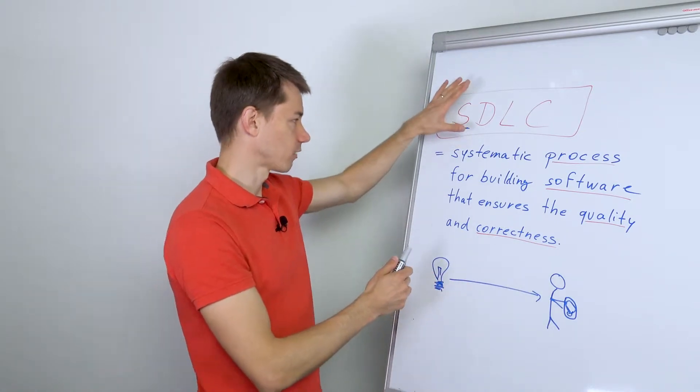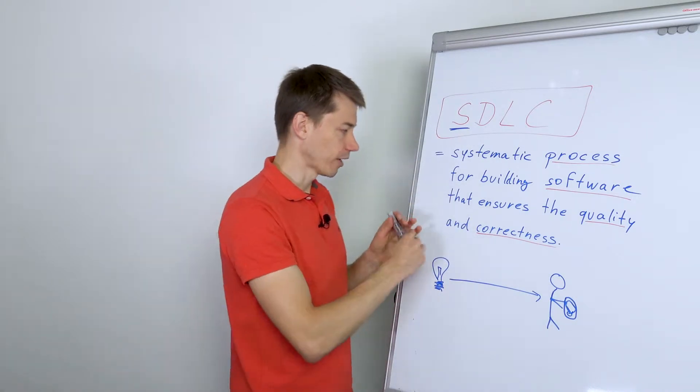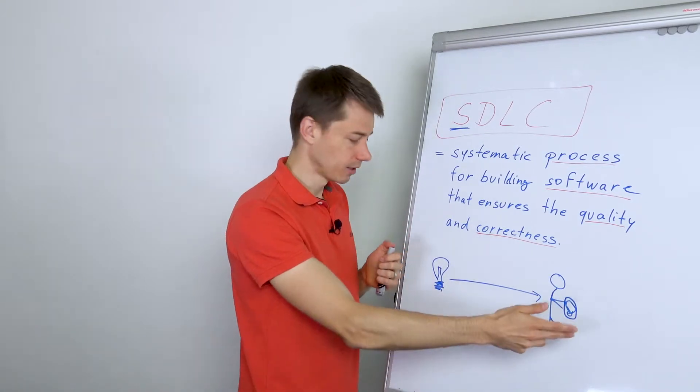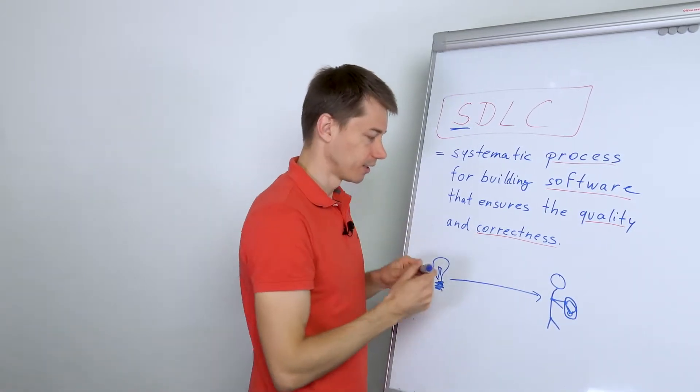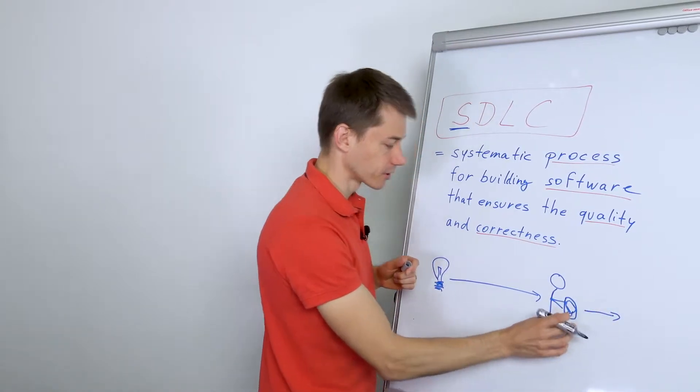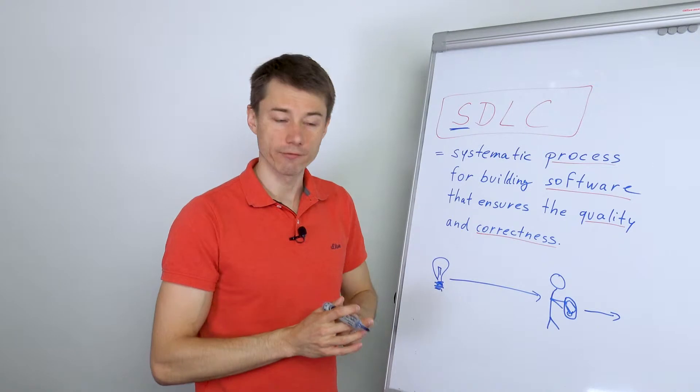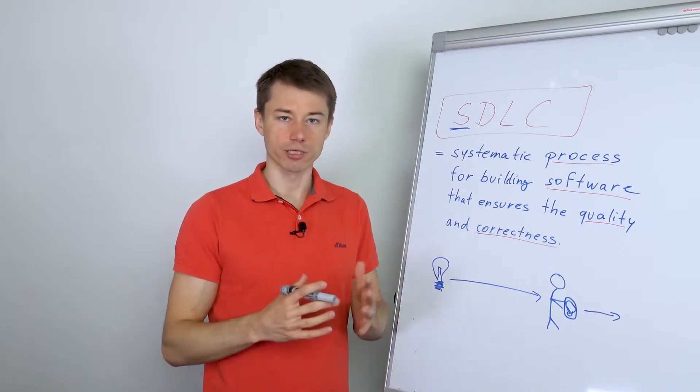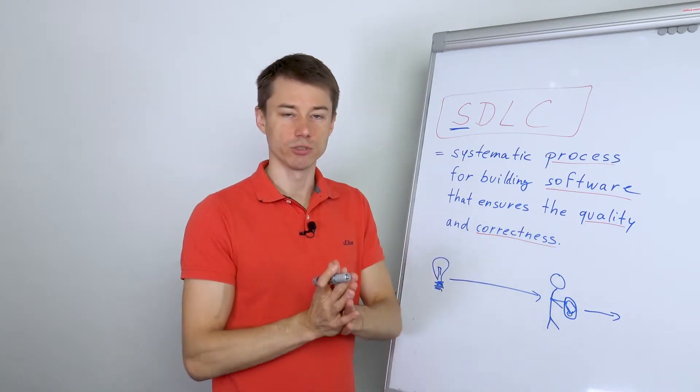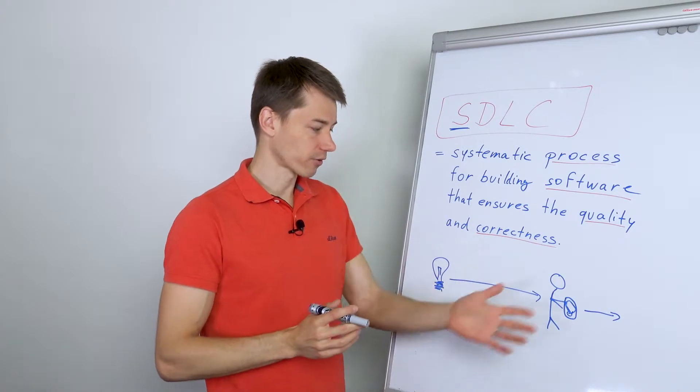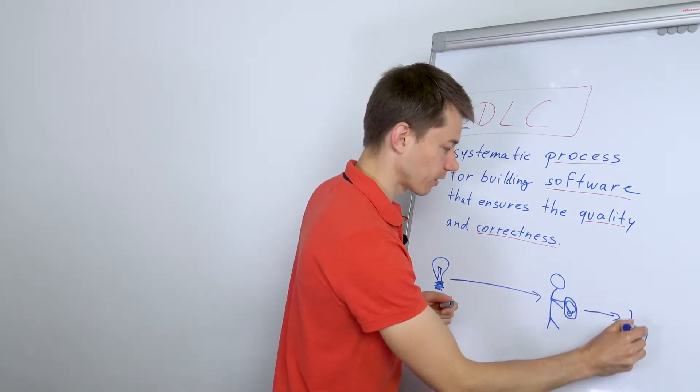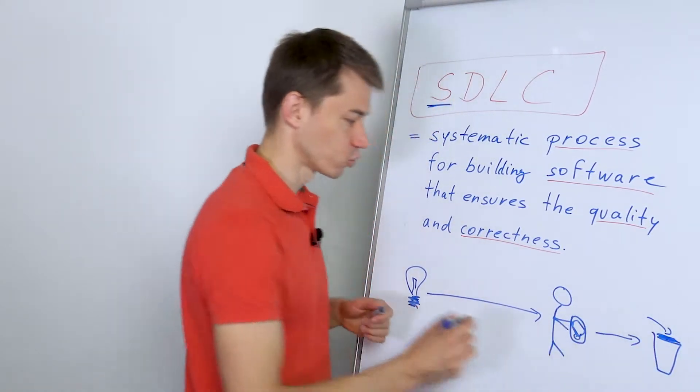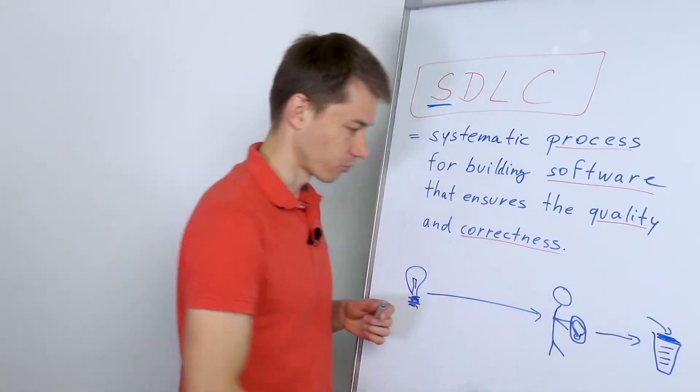In other words, the software development lifecycle is a process that ensures the quality and correctness of what you're trying to build and helps you bridge there. It actually goes even a step further because the product will not be used forever. At some point you need to cancel the project or stop maintaining it. In many cases, just throw it away - sooner or later you need to throw it to the bin.